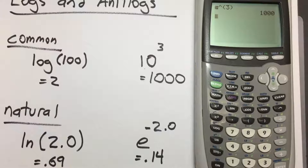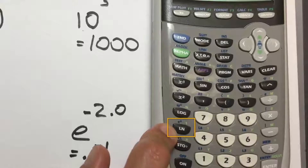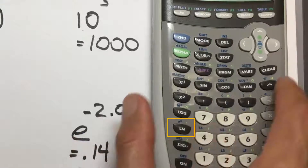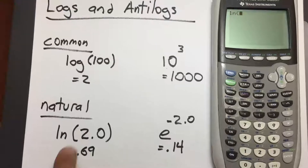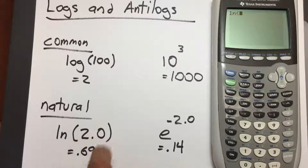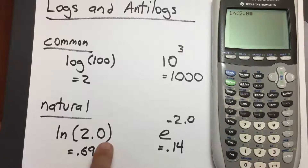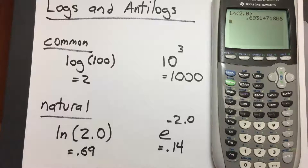To take the natural log, look for the button that says LN — it's right underneath LOG. Clear the screen and press the LN button. Our number is 2.0, so enter that, press close parentheses and then enter. We get 0.693, which I've rounded to 0.69.